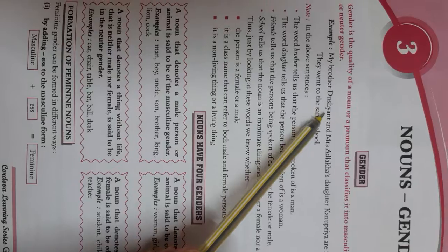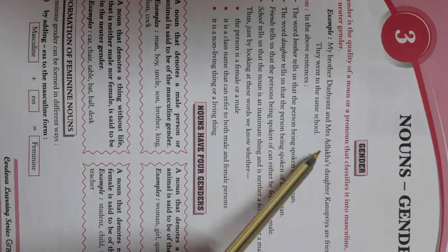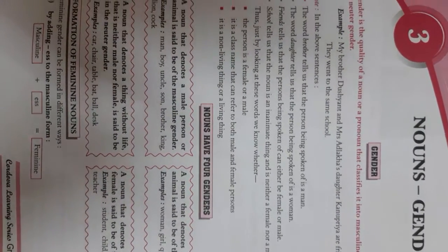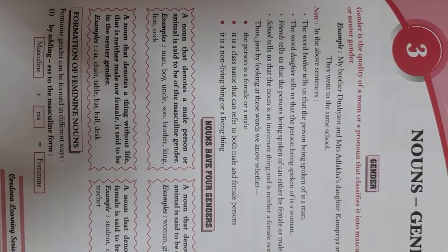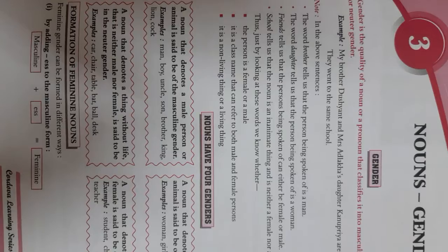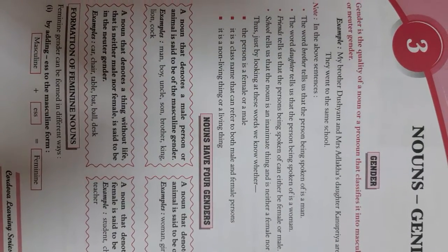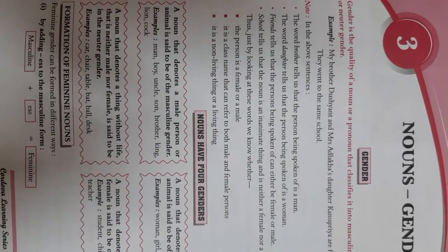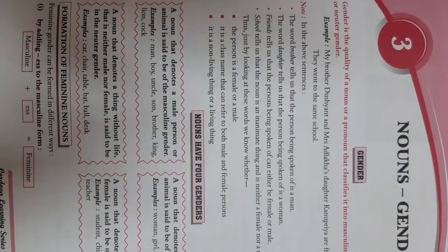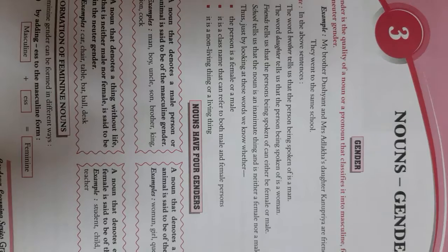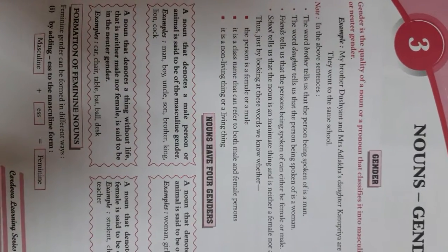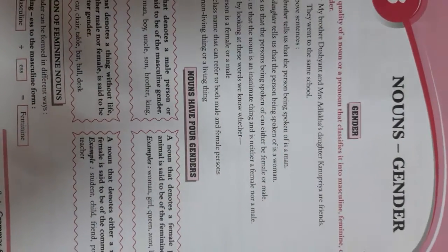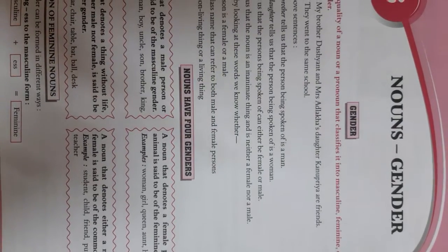My brother Dushant and Mrs. Adalkha's daughter Kanupriya are friends. They went to the same school. Now in the above sentences, the word 'brother' tells us that the person being spoken of is a man. The word 'daughter' tells us that the person being spoken of is a woman. 'Friends' tells us the person can be either female or male. 'School' tells us the noun is an inanimate thing and is neither female nor male.